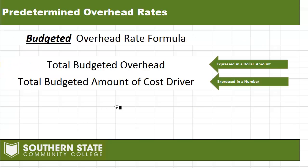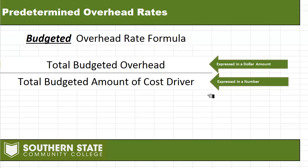The first thing we need to look at is the formula to determine the predetermined overhead rate. I don't really like that terminology — I think a better term is 'budgeted' because essentially what we're doing is budgeting our overhead for the year. So whereas the book says predetermined, I'm going to say budgeted, as I think that's an easier concept. When we plug it into the formula the book gives us, we get total budgeted overhead divided by the total budgeted amount of the cost driver.